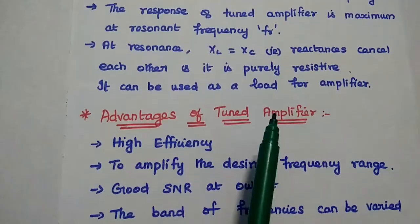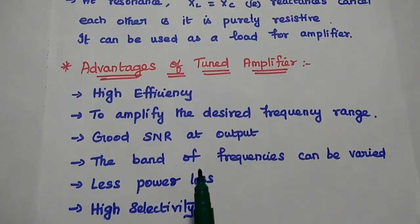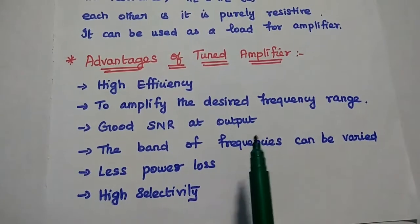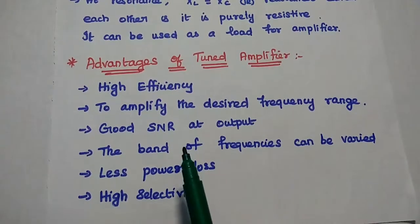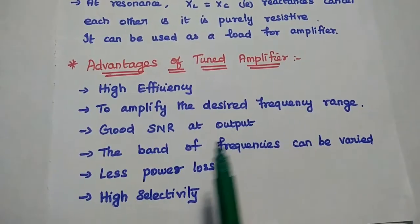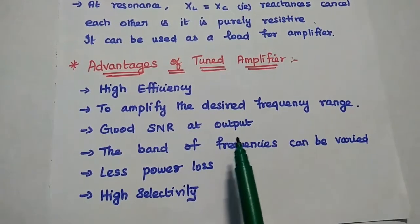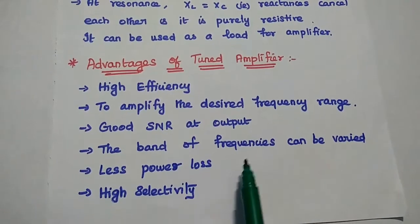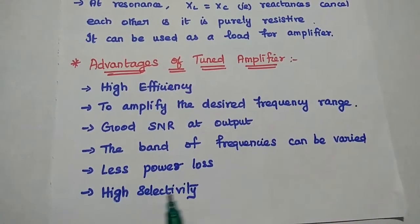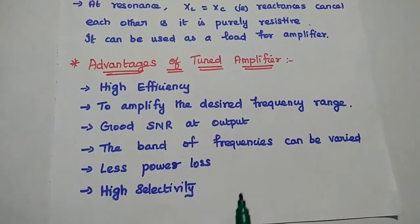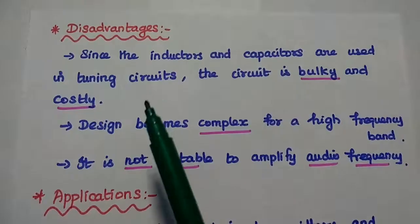Advantages of tuned amplifier: It provides very high efficiency and high gain. It is mainly used to amplify the desired frequency range. It has good signal to noise ratio at output side. The band of frequencies can be varied. It has very small power loss and high selectivity.